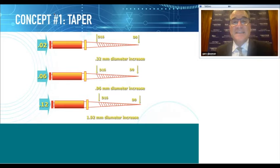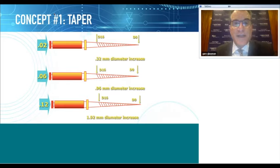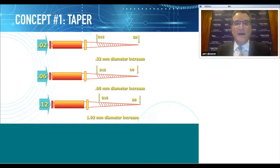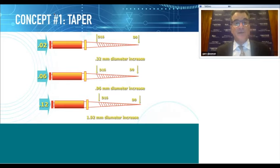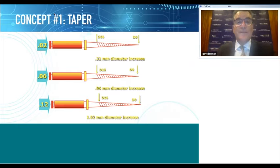A file with a 0.02 taper—also called a 2% taper—means that for every millimeter you go up that file, the diameter increases by 0.02 millimeters. A file with a 0.06 taper, or 6% taper, means the diameter increases by 0.06 millimeters per millimeter, and so on.